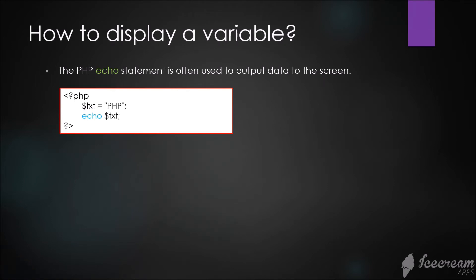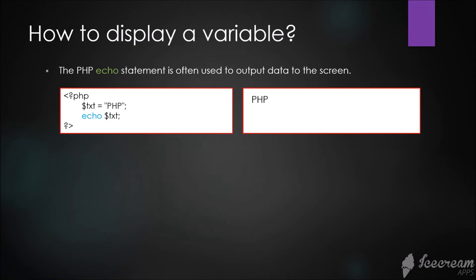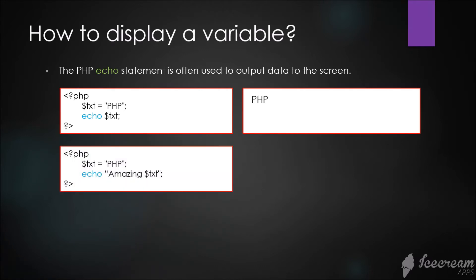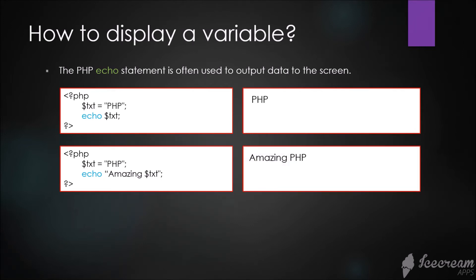The output will be PHP. In another example with the declaration, in the echo statement we have some text combined with the variable. What do you think will be the output? The output will be 'Amazing PHP'.